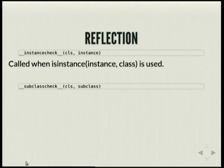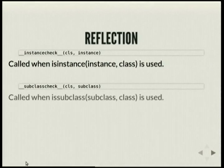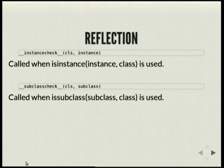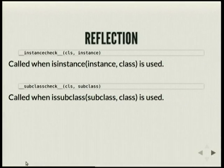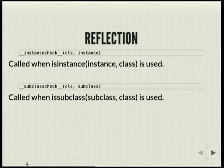You can also use magic methods to override the default method for reflection, so you can write __instancecheck__ and __subclasscheck__ to override how your instances and subclasses are checked.